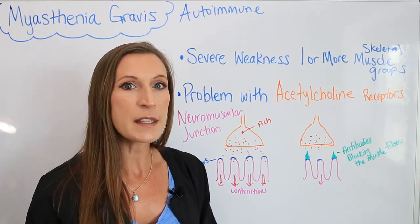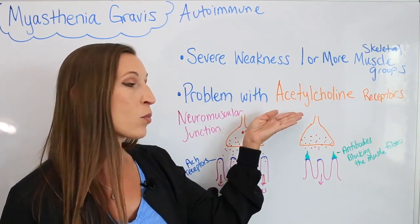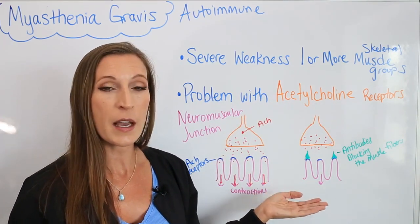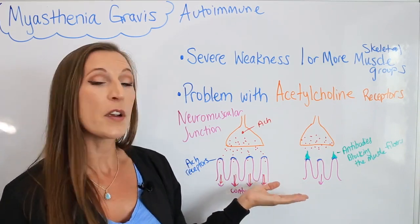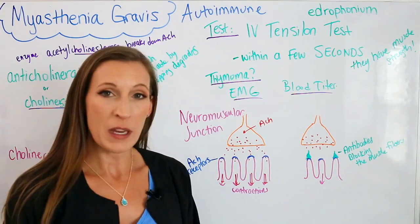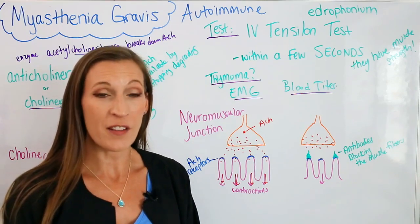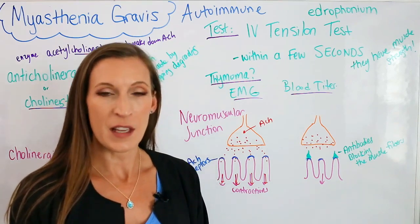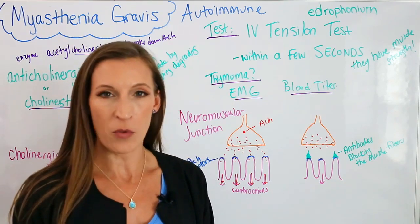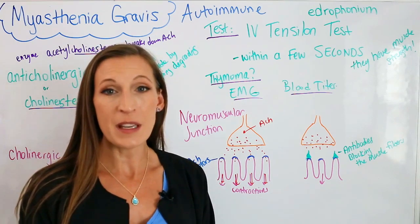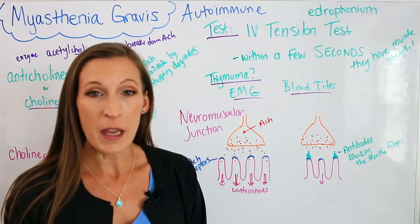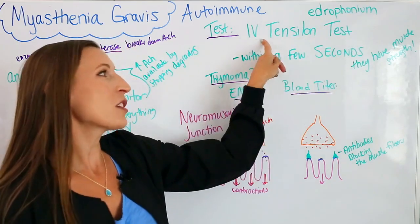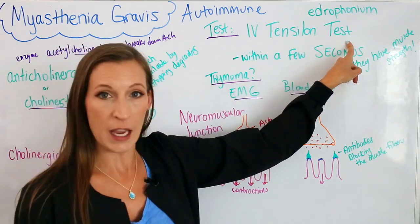Make sure you understand the acetylcholine role here — it plays an important part when we give medications. If the patient comes in with some weakness and we need to figure out if this is what they have, the first thing they'll probably do is the Tensilon test. It's easy to perform and produces immediate results. It is an IV medication called edrophonium, and we usually call it Tensilon.